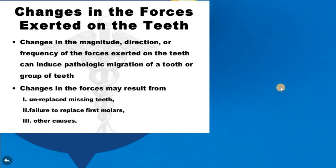Changing the forces exerted on the teeth — as discussed in trauma from occlusion — changing the magnitude, direction, frequency, and duration of forces exerted on the teeth can induce pathological migration of a single tooth or a group of teeth. A change in force may result from unreplaced missing teeth, failure to replace the first molar (because it is a crucial tooth), and other causes.